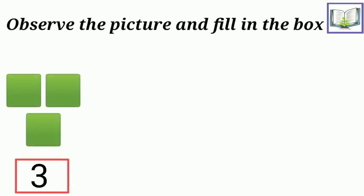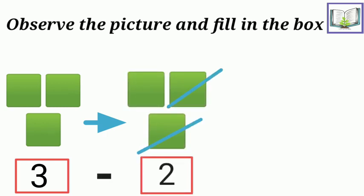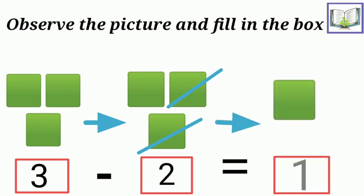Here are some squares, there are three squares out of which some get subtracted, how many? Yes, two get subtracted. So how many squares we are left with? That's right, one. So three minus two is equals to one.